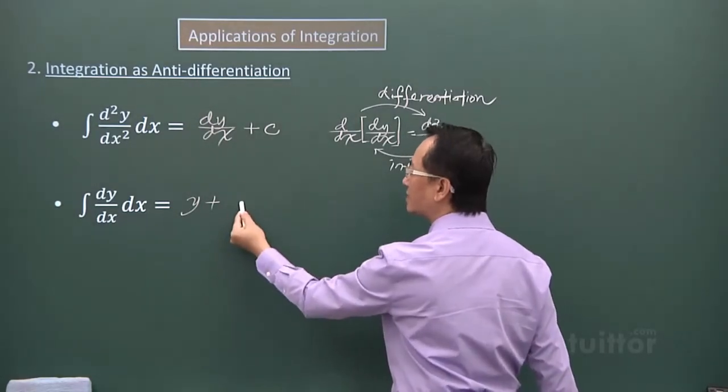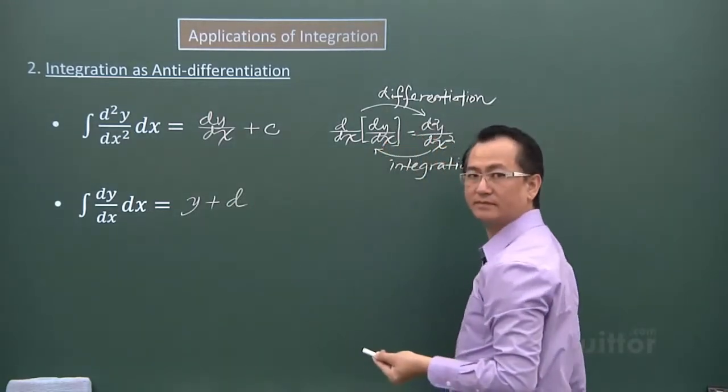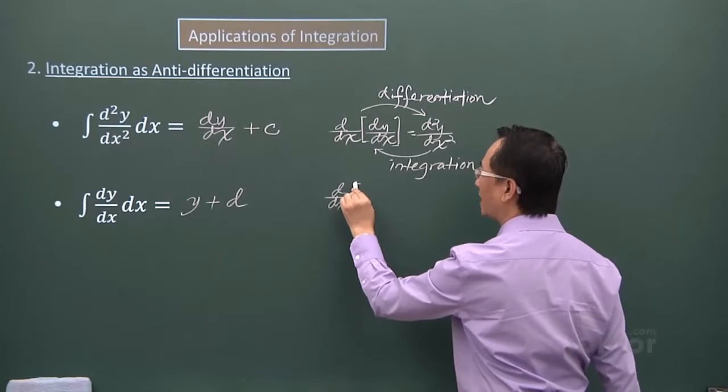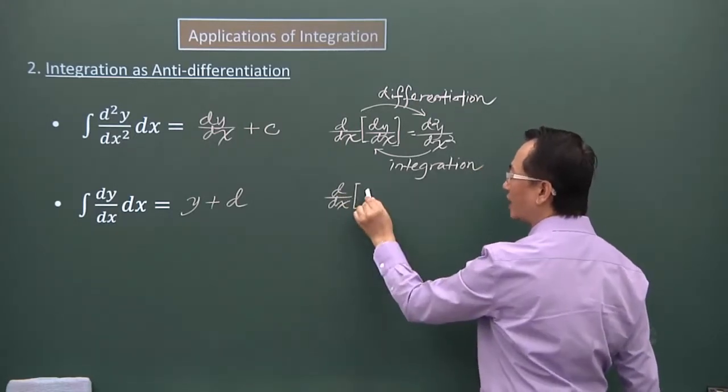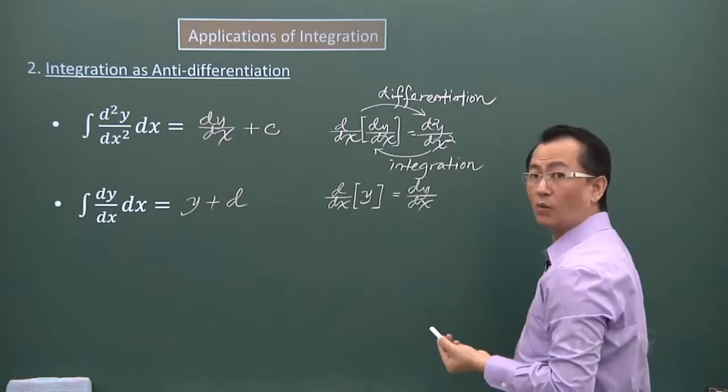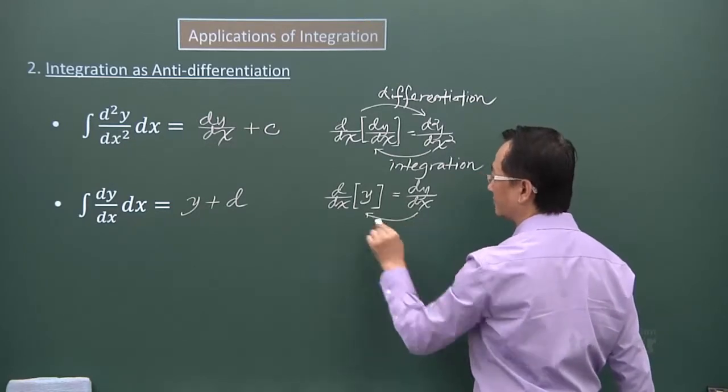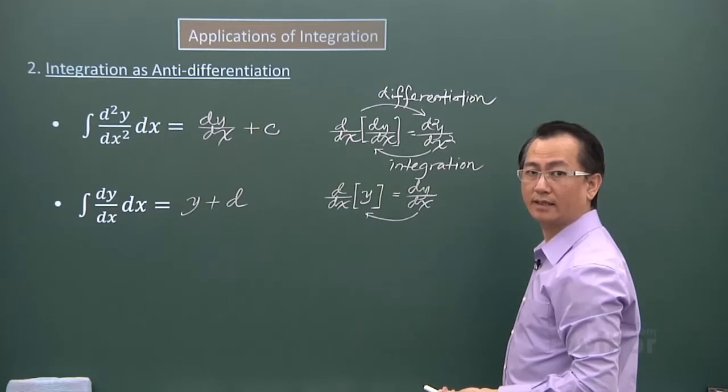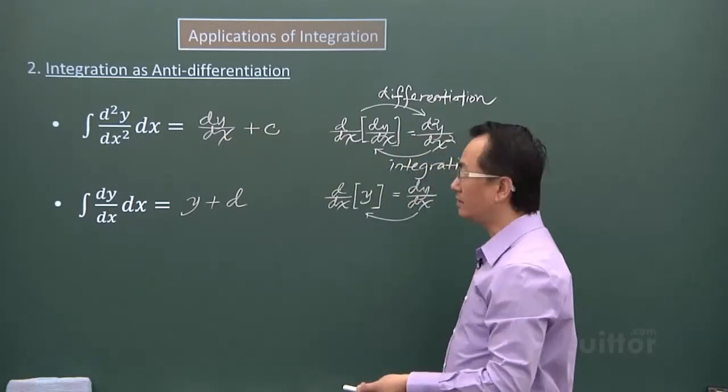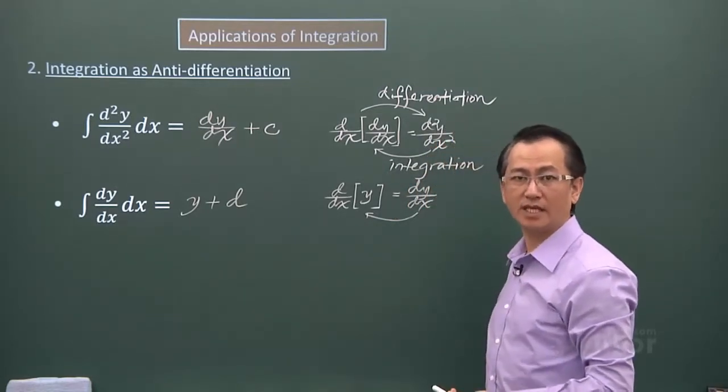Instead of using the same symbol for the constant term to avoid confusion, I will just give it a d. So let me show how the process is for the differentiation. If I differentiate the y function, I'll get the first derivative, dy over dx. What I'm seeking to do is to integrate dy over dx, and I get my y. Again, let me stress this. This integral is an indefinite integral. And therefore, I will have to include a constant term in my result.